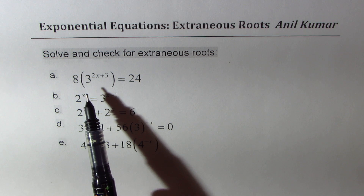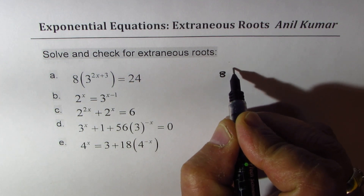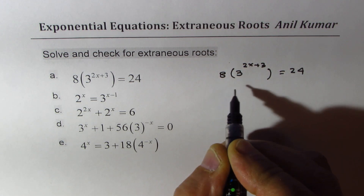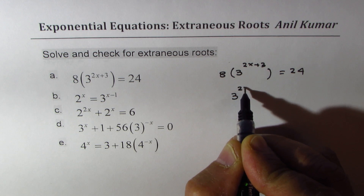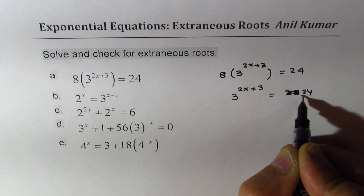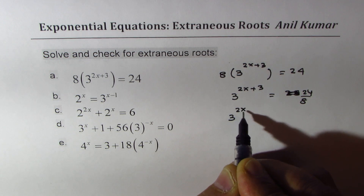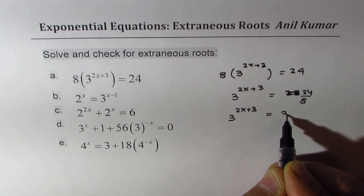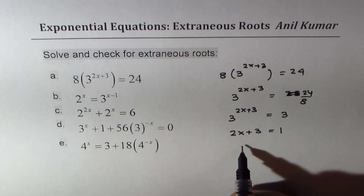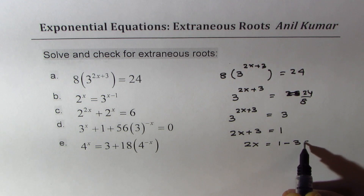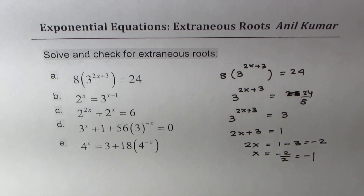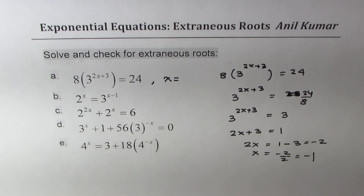Let's begin with the very first one, which is 8 times 3 to the power of 2x plus 3 equals 24. We divide 24 by 8, so we get 3 to the power of 2x plus 3 equals 3. That means the exponents must be equal, so 2x plus 3 equals 1, giving 2x equals minus 2, and therefore x equals minus 1.